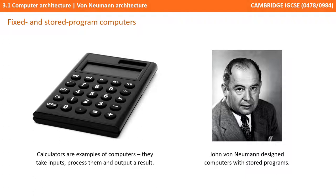The earliest computing machines had fixed programs. For example, a desktop calculator is an example of a fixed program computer — it can do mathematics, but it cannot be used for any other purpose. Changing a program of a fixed program machine requires rewiring or redesigning the machine. A stored program computer is one that has changeable programs. In 1945, the mathematician and physicist John von Neumann described the first design for modern computers that had stored programs, and this way of designing computers became known as the von Neumann architecture.